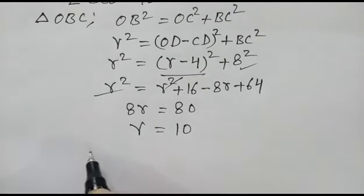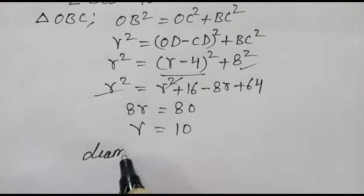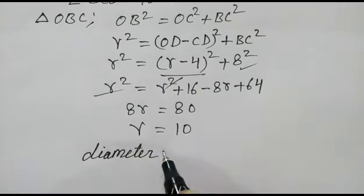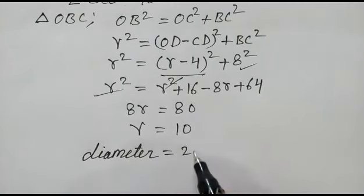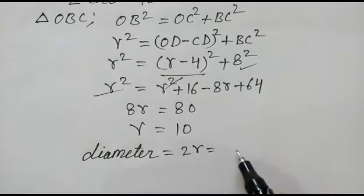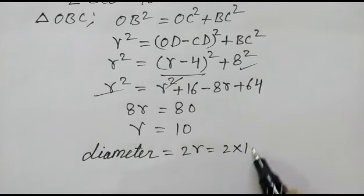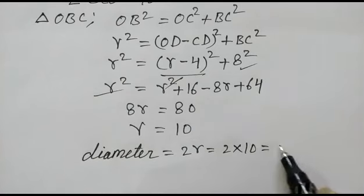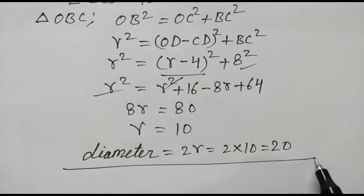So the diameter of the circle is equal to 2R, which is 2 times 10, equal to 20.